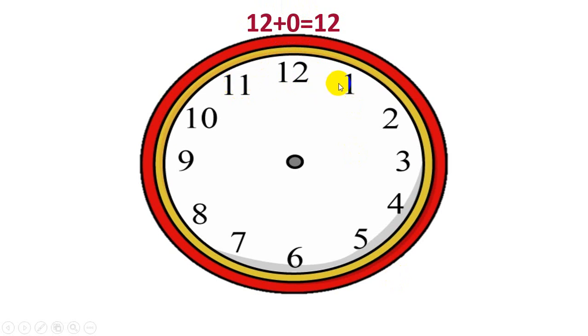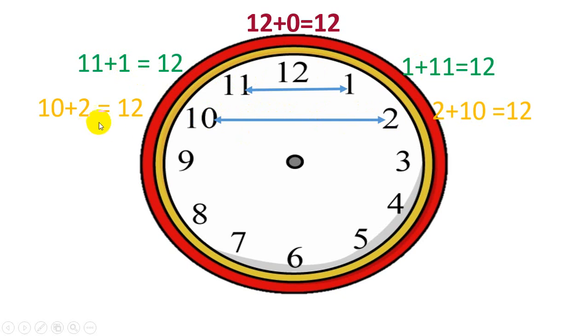Now the next one will be 11 and 1 like this. I will get 1 plus 11 or 11 plus 1. Now the next one would be 10 and 2 and the number pairs would be like this. Now the next one is 9 and 3 and I will have the number pairs like this. Now the next one would be 8 and 4.